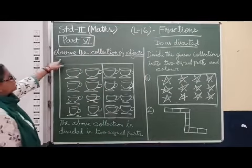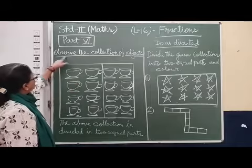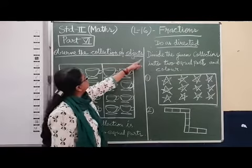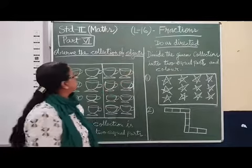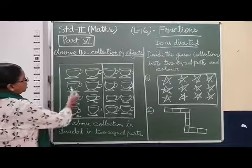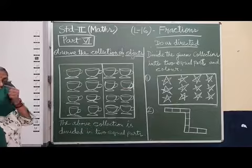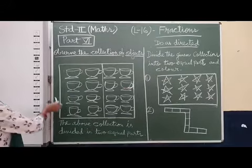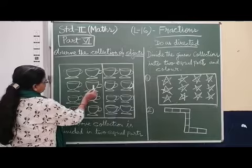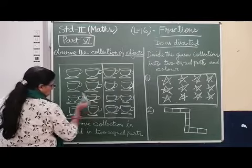Yes, you can see here this event. Here observe the collection of objects. What you have to see? You have to see some cups are here in this box. But how many cups do we know? Let us count. Okay? One, two, three, four, five, six, seven, eight.